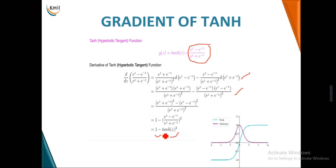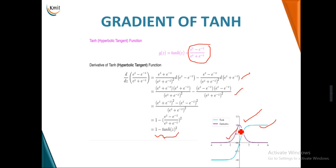The derivative of the tanh function is 1 − tanh²(z). In the plot, the sky blue reference waveform shows the tanh function, and again you can see a bell-shaped stable waveform for its derivative. We have now derived two activation functions and their gradients.